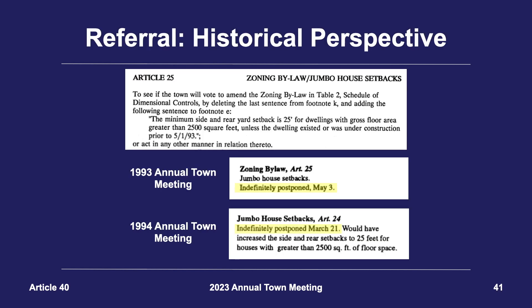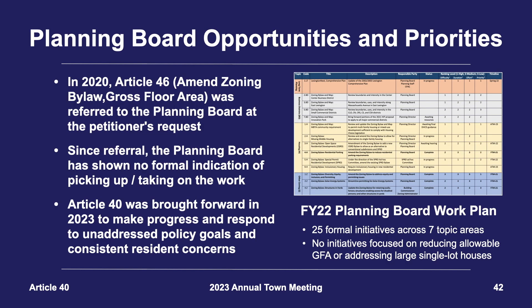Should Article 40 be referred back to the Planning Board? In the early 1990s, the Planning Board put forth what were likely the first zoning articles to address large new houses in Lexington; unfortunately, those articles were postponed, and the town would not see action again on this issue until essentially 22 years later. In 2020, a similar GFA proposal, Article 46, was referred to the Planning Board during the pandemic. Since referring, the Planning Board has shown no formal indication of taking on this work. The work plan for FY22 had 25 formal initiatives across seven topic areas, and none were focused on reducing allowable GFA or addressing large houses on single lots. If Article 40 were referred, there is no clear timeframe of if or when the Board might directly engage in this work, and planning staff have noted there will likely be significant work ahead on multifamily housing zoning after this town meeting.